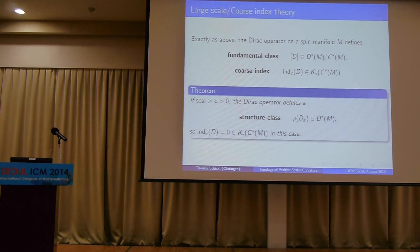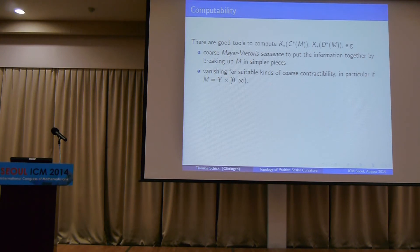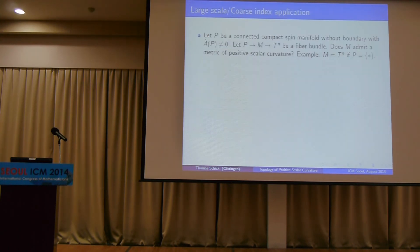For these coarse algebras, computation tools exist: there is a Mayer-Vietoris sequence allowing us to cut the space into simpler pieces, and vanishing results for certain coarse spaces — in particular, if M is of the form something times a half-line, all K-theory groups vanish. Putting these together, we can decompose ℝⁿ into two half-lines and inductively reduce computation of K-theory of C*(ℝⁿ) to the K-theory of a point.